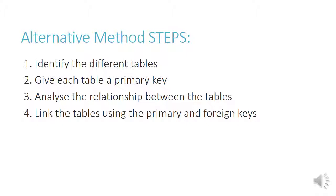To finish off, here are the alternative method steps again. Number one, identify the different tables. Two, give each table a primary key. Three, analyze the relationship between the tables. And four, link the tables using primary and foreign keys.